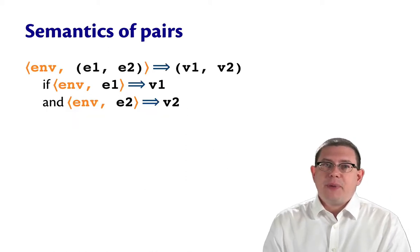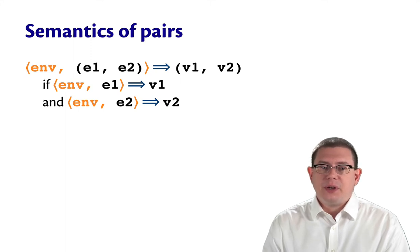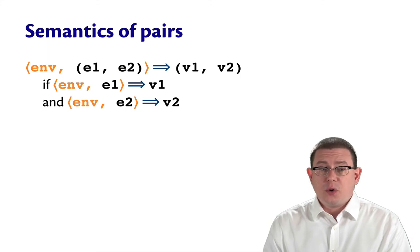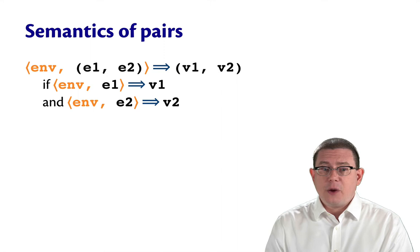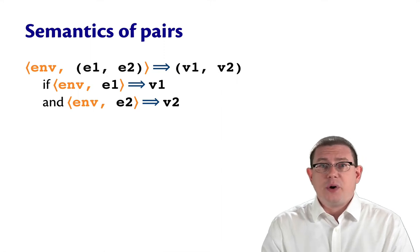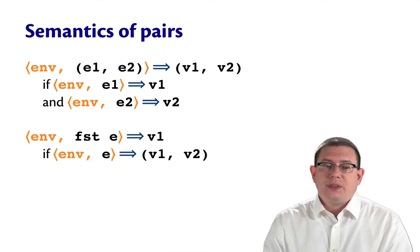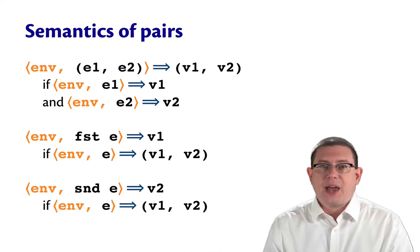The semantics of pairs is really quite straightforward. Everything in black here is the same as it was before we started using environments. It's just the orange that's new, and all that is is taking that current dynamic environment and using it to evaluate each component of the pair. The same for first and the same for second.